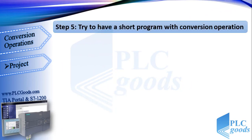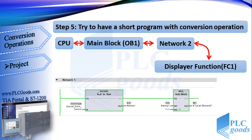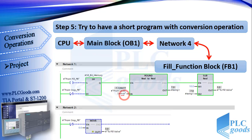Now let's have a shorter program using conversion operations. For the display function, we have Round and Multiply instructions. The level sensor gives a number between 0 and 10, the Round instruction converts it to an integer, then it is multiplied by 10. In the fill function, when the start push button is pressed, the Round instruction converts the level sensor value to an integer, which is then subtracted from 10 — because in the filling function the liquid level and fill valve capacity have an inverse relationship. Let's test and see the final program.